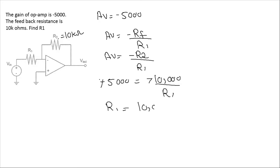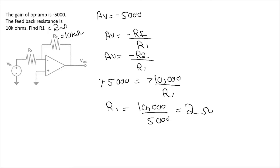The minus signs cancel, so R1 equals 10k ohm divided by 5000, which equals 2. Since this is a resistance, R1 is equal to 2 ohms. This is my answer.